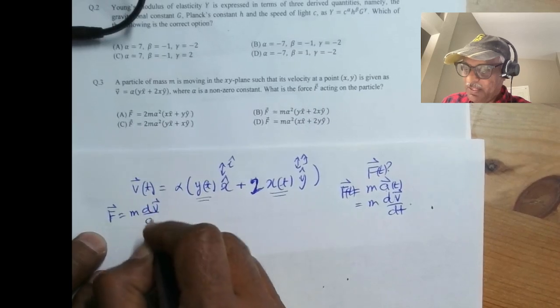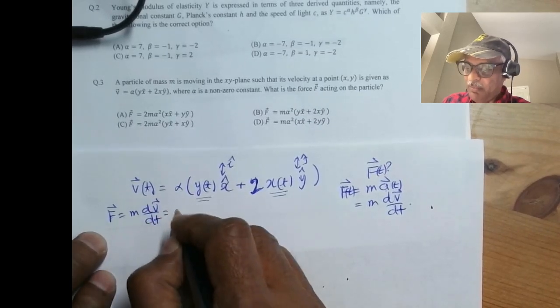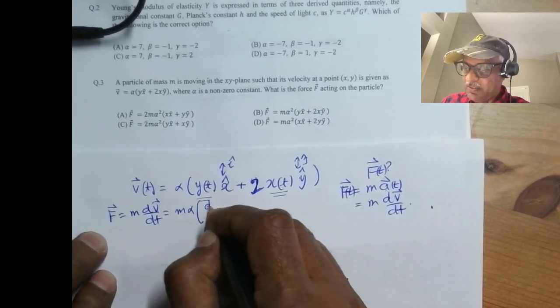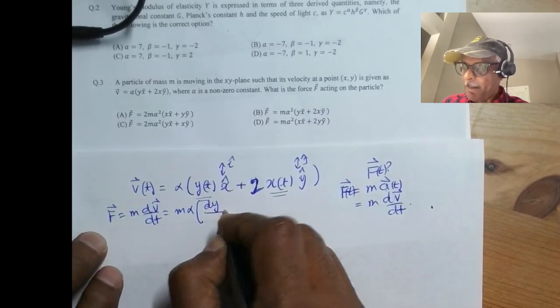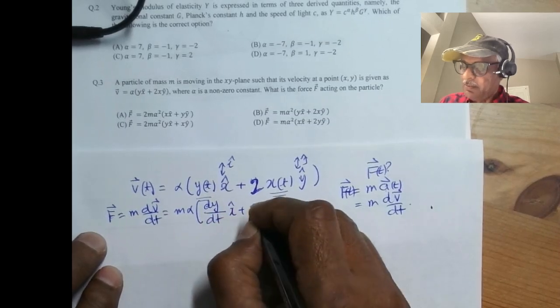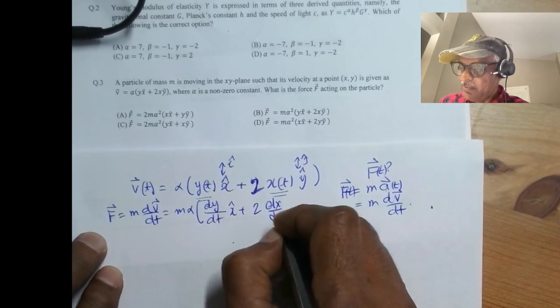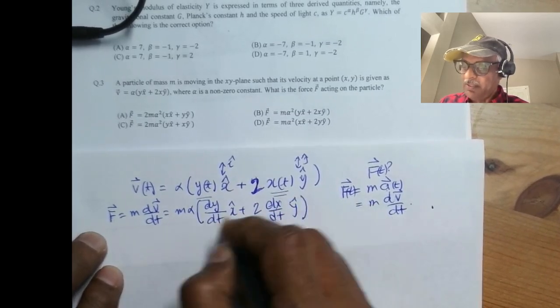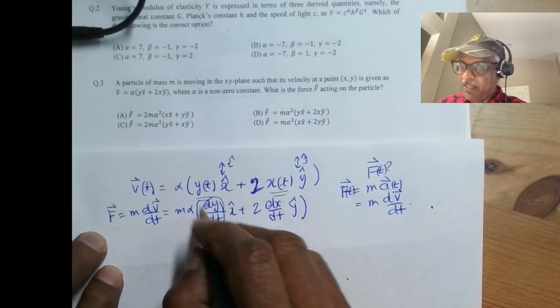So F equals m dv/dt, so m times alpha dy/dt x hat plus 2 dx/dt y hat.